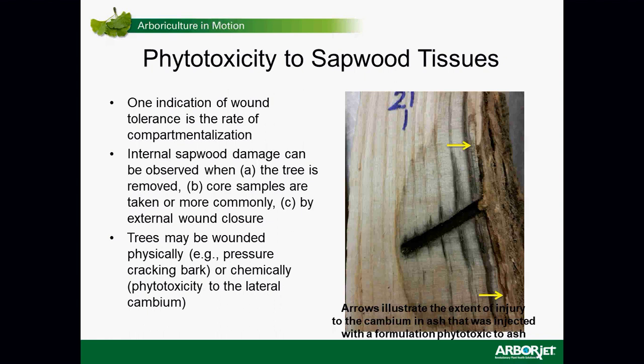Tree wounds can be created in two ways. One is physical pressure — if your injector is not set properly you can crack the bark, so high-pressure applications require some caution. More typically, once you are experienced at injecting, it is chemical phytotoxicity that may cause issues. An autopsy done three years after injection with a particular formulation showed that the product caused phytotoxicity to the inner bark; the yellow arrows indicate how much the lateral cambium was burned, and the tree couldn't fully respond — it took at least three years to begin closing over.